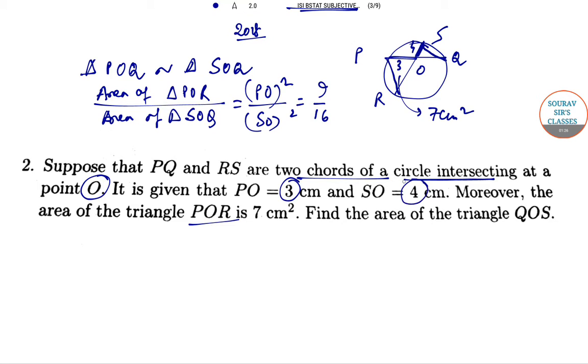According to these two values, 9, 3 squared and 9 by 16. So area of triangle SOQ is nothing but 16 by 9 into this value was 7 cm² as angle POR. So 112 by 9.